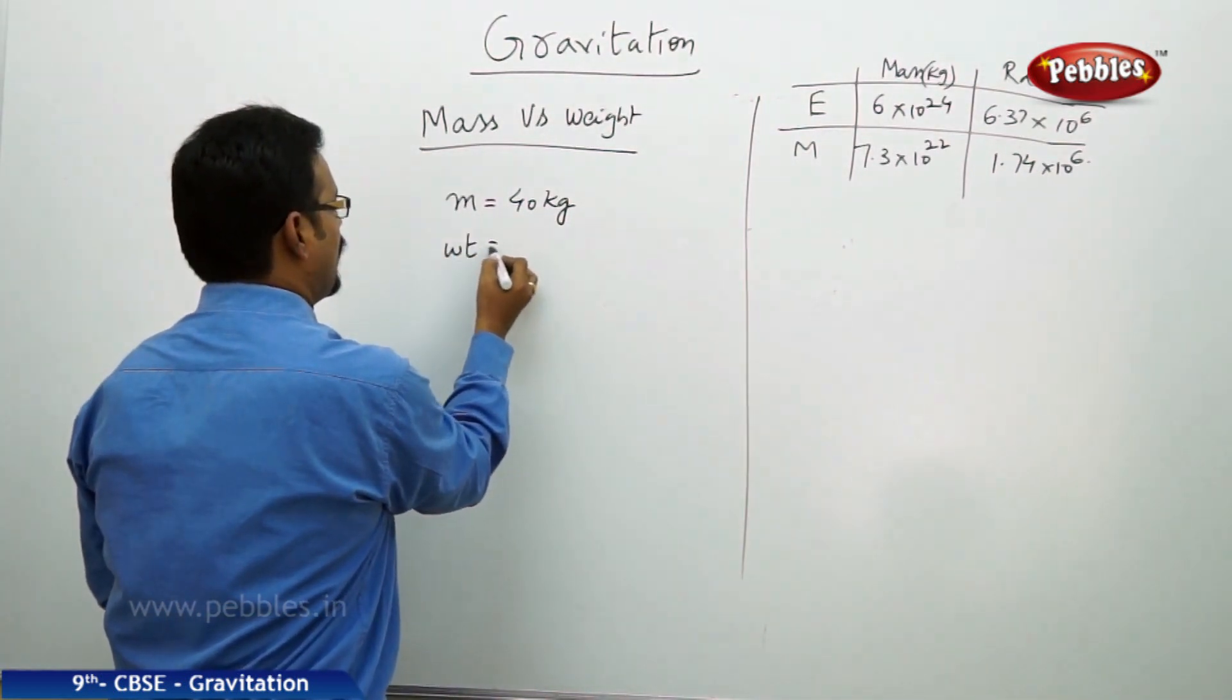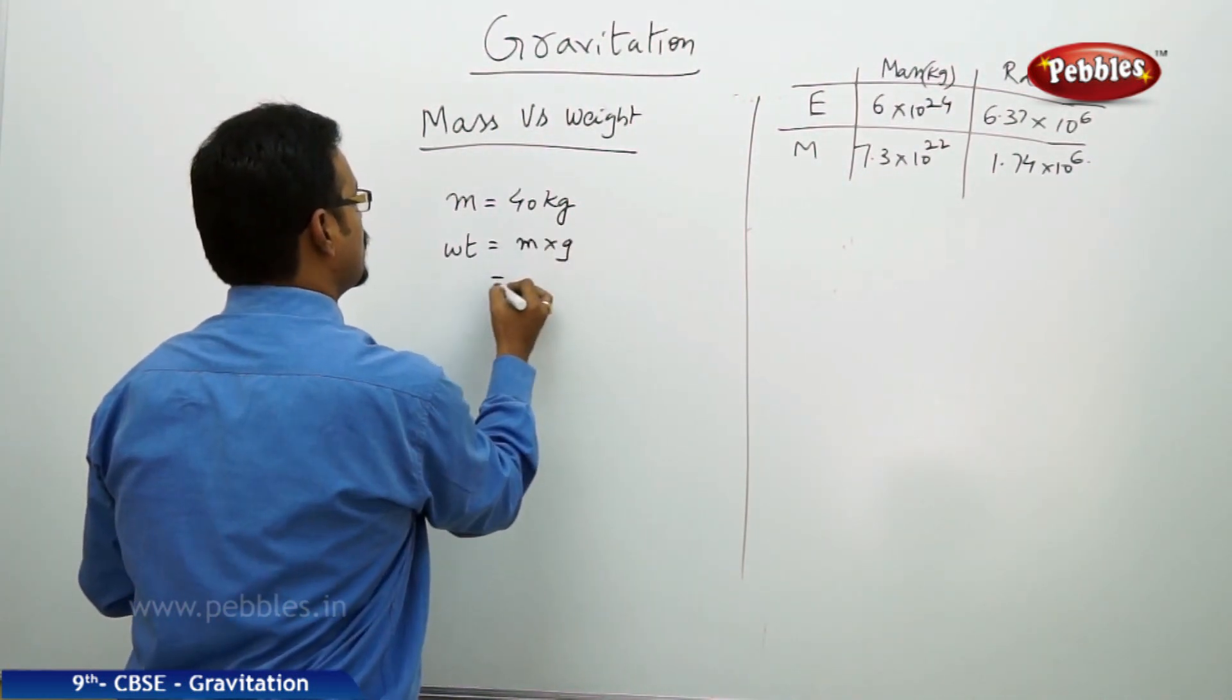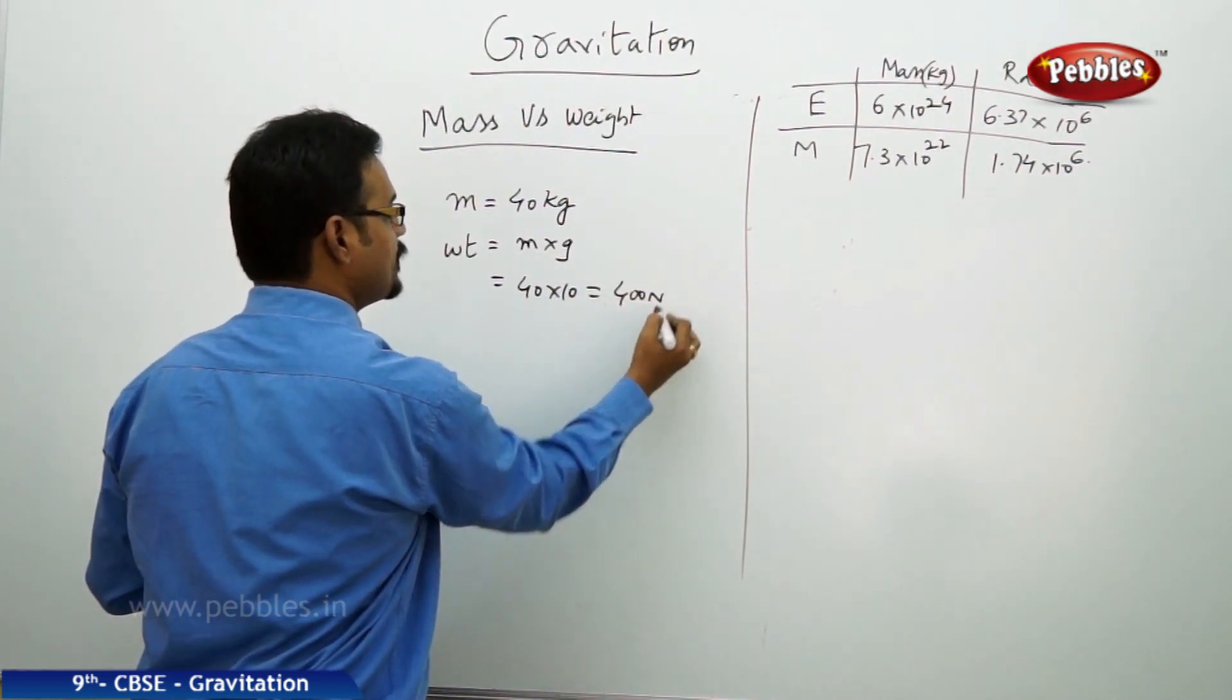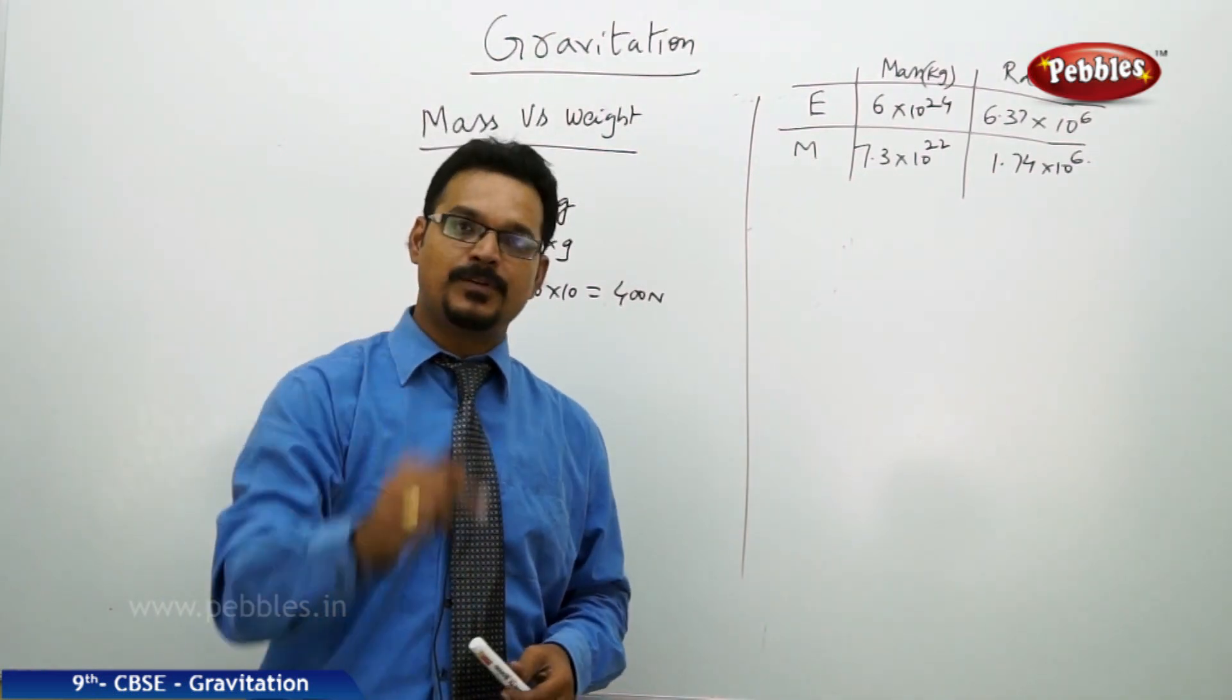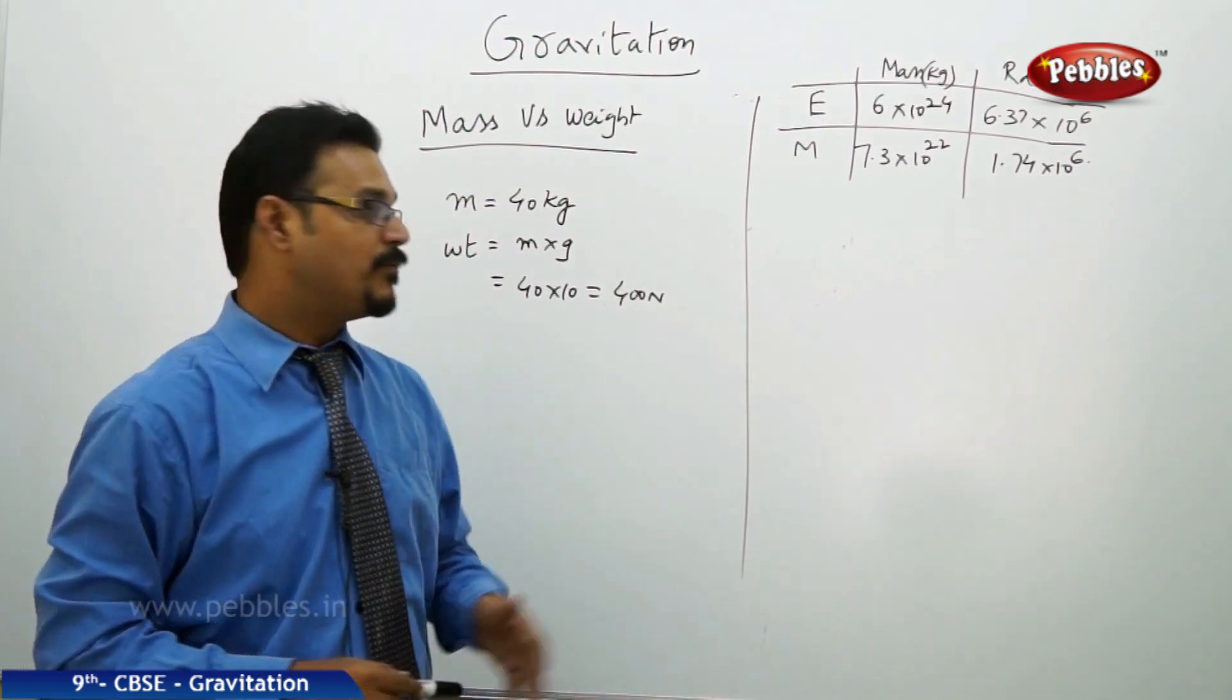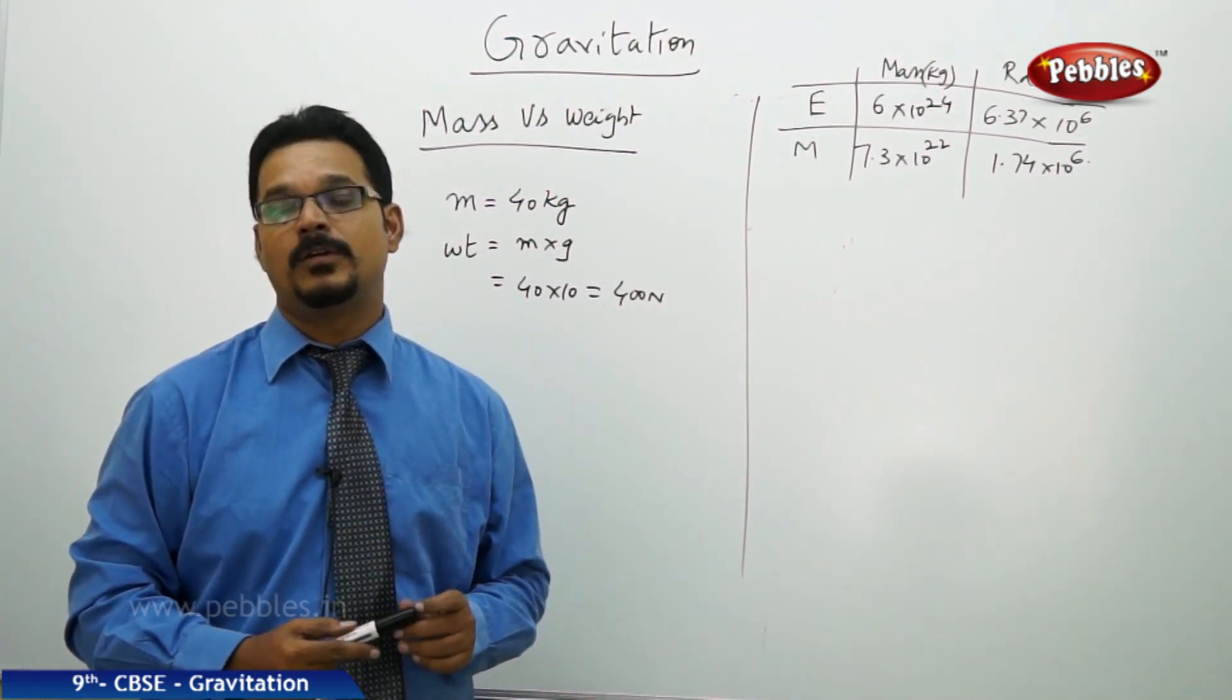So when mass is 40 kg, the weight formula we already know is mass into gravity, so this is 40 into 10, which is 400 newtons. So if again the person asks you what is your weight, you need to answer that my weight is 400 newtons. That is the right answer.